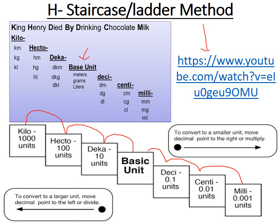There's also a mnemonic to remember the staircase order: King Henry Died By Drinking Chocolate Milk — Kilo, Hecto, Deca, Base unit, Deci, Centi, Milli. This doesn't have all units you would see, but it covers the most important ones. For science, you especially want to know how to convert to centi, milli, and kilo, as you'll see those frequently when measuring substances in the lab, particularly in grade 11 chemistry when dealing with quantities of chemicals.